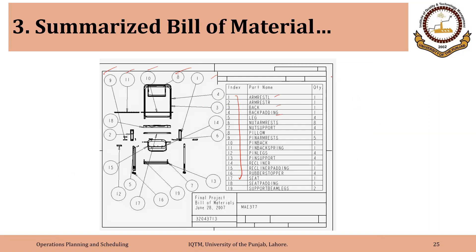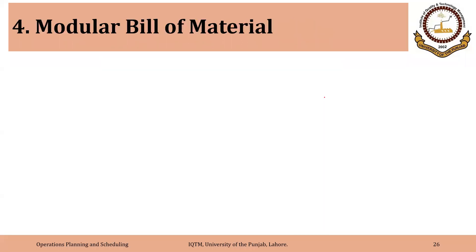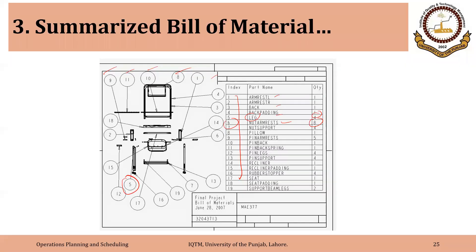For example, this is the bill of material of a seat or a chair. At number five, we have legs with a quantity required of four. At number six, we have nut armrests with a quantity required of eight, and so on. That is the summarized bill of material.